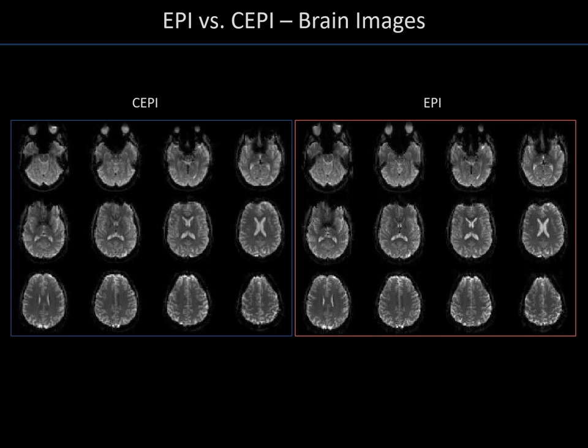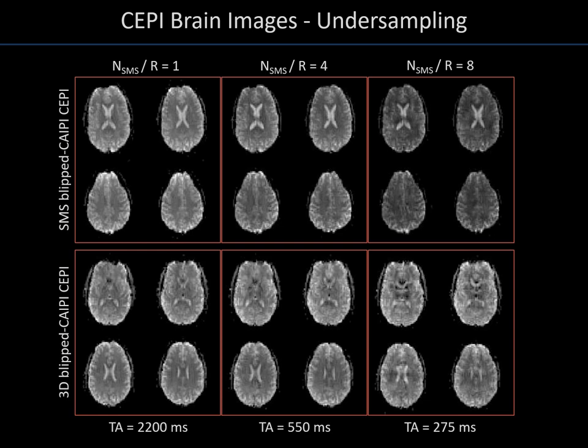These are the fully sampled brain images obtained using the CEPI and EPI trajectories. Thirty-two slices of three millimeter thickness were obtained. In agreement with the results from the simulations, the image quality is very comparable. The acquisition time for fully sampled images is 2.2 seconds. To accelerate the acquisition, blipped-CAIFI undersampling schemes were applied with four- and eight-fold acceleration. Using these CEPI gradients, SMS as well as 3D volumetric CEPI fMRI time series were measured. Each set of images was windowed equally, and one can see that in the case of SMS, a clear reduction of the SNR occurs with higher multiband factors, while for the 3D acquisition the SNR is nearly constant.